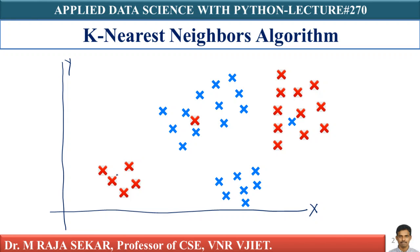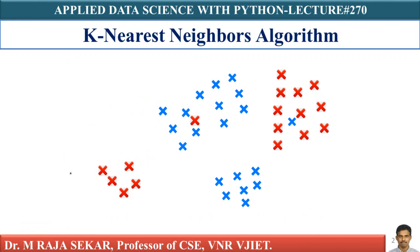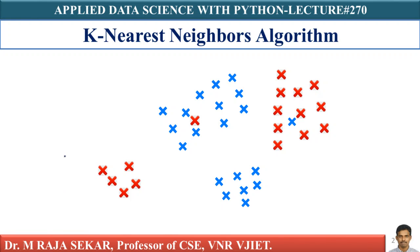These are data points — each cross represents a data point. Blue crosses represent positive points, and red crosses represent negative points. This is a binary classification problem, so we have only two classes: the positive class and the negative class.